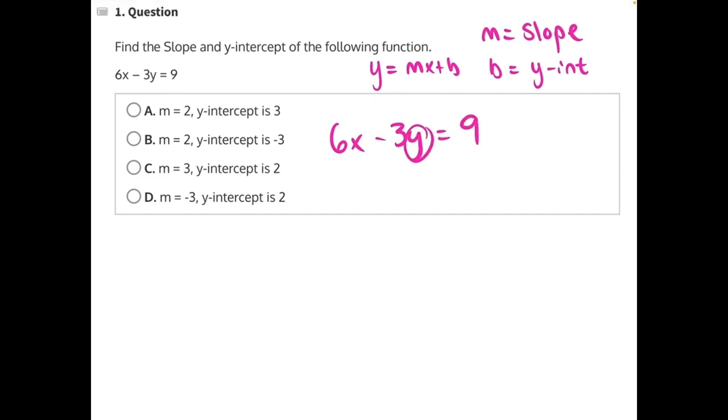Starting with 6x, this is a positive 6x, so the opposite of a positive is a negative. So we will take negative 6 to both sides. This will cancel, leaving us with negative 3y equals negative 6x plus 9.